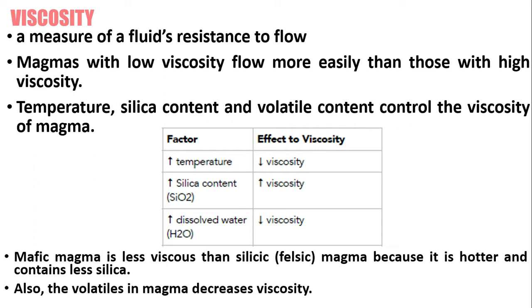Also, the volatiles in magma decrease viscosity. So when there are more volatile substances in the magma, the viscosity decreases.